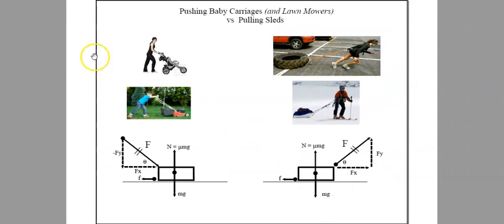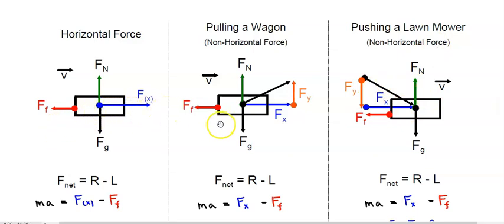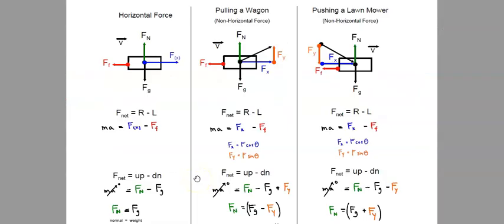Let's take a look at the mathematics for these situations. In the following diagrams I have the free body diagram set up for three cases: a horizontal force, a quadrant 1 pull, and a quadrant 4 push like a lawnmower. The horizontal component FX is shown in blue in all three cases, the weight FG is black, the normal force is green, and friction is red. Friction is always opposed to the horizontal force FX.